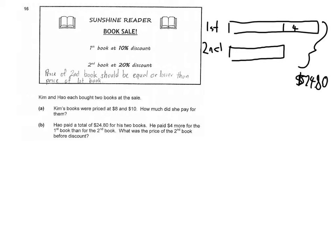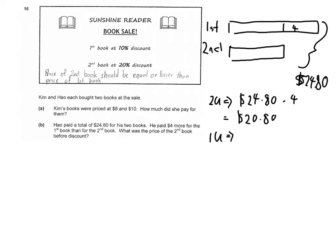From the model, two units equals $24.80 minus $4, which is $20.80. So one unit is $20.80.